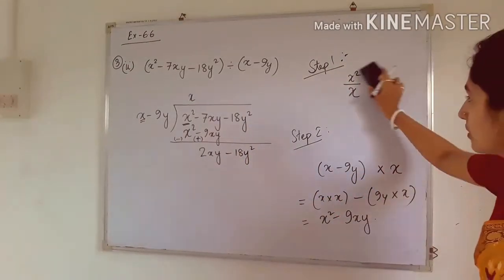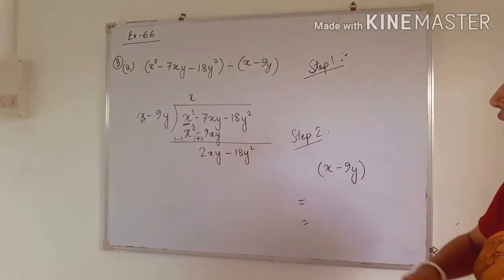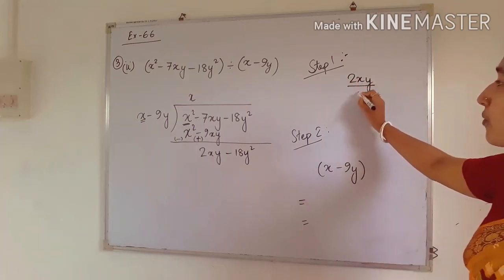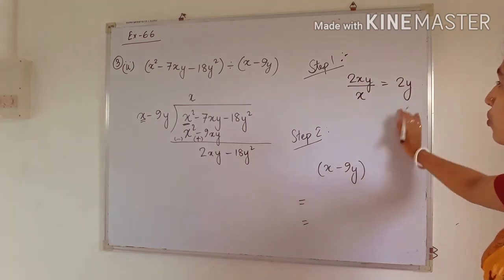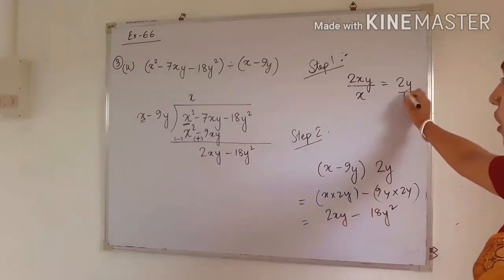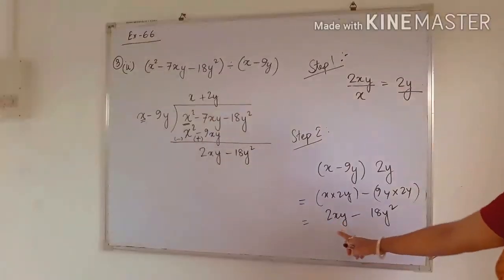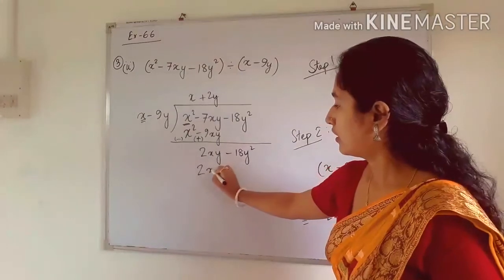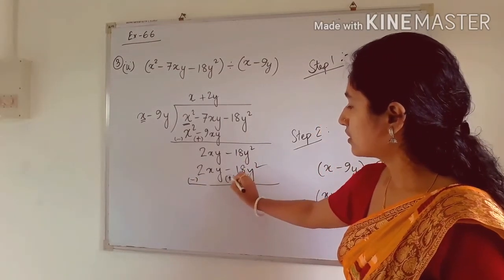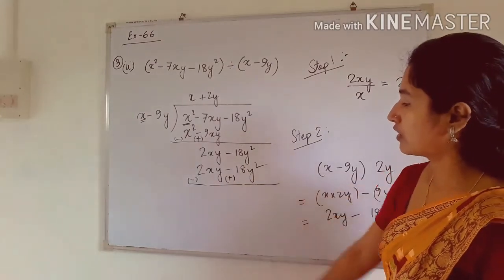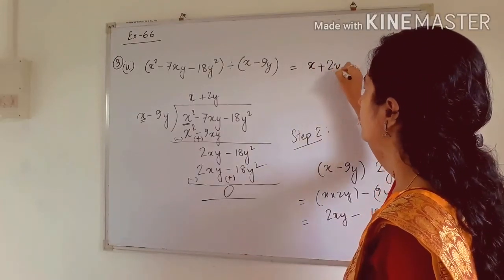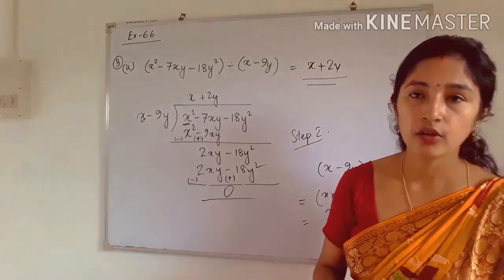Next, our new dividend's first term is 2xy, divided by x (first term of the binomial), giving 2y. We multiply 2y by the divisor to get 2xy − 18y². After subtraction: 2xy − 2xy = 0, and −18y² + 18y² = 0. Remainder is 0. The quotient is x + 2y, meaning the polynomial divided by the binomial gives x + 2y.